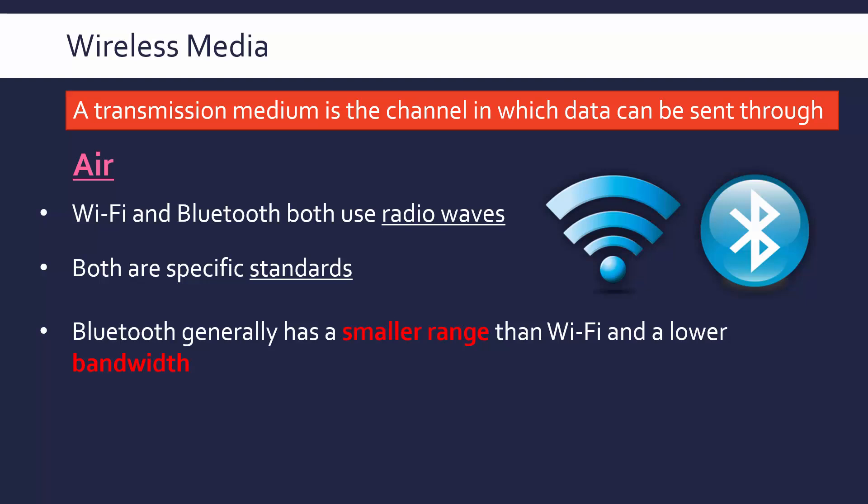Wi-Fi is generally used for local area networks — your house or your place of work. Its range is not massive, maybe around 100 meters unless you extend it with a wireless access point. Bluetooth has a much smaller range, potentially just 10 meters or a little more in some cases.